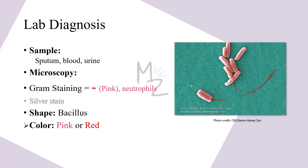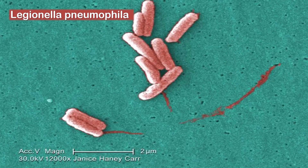Lab diagnosis requires three samples: sputum, blood, and urine. On gram staining, the bacterium stains weakly but does stain and appears pink colored. Sputum gram stains reveal many neutrophils but few bacteria. Since it stains poorly with gram staining, we use silver stain to visualize it. It is a rod-shaped (bacillus) bacterium appearing pink or red in color.